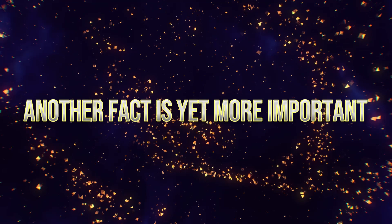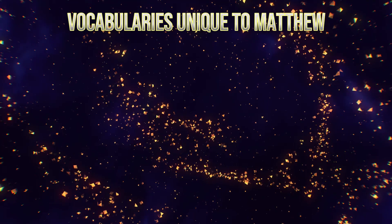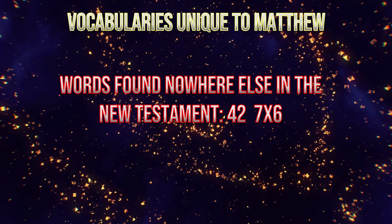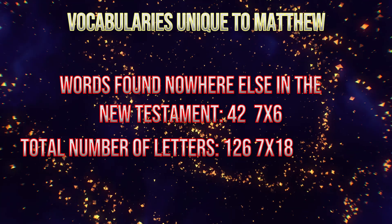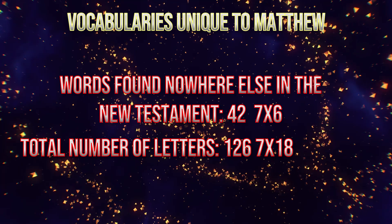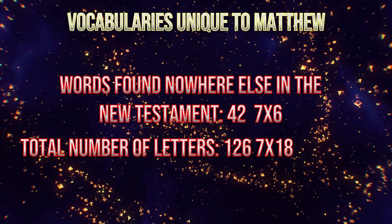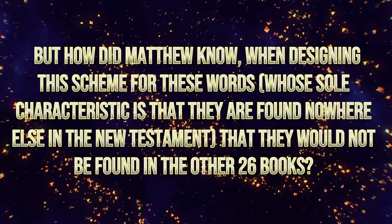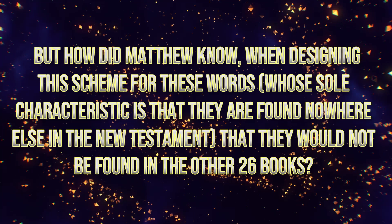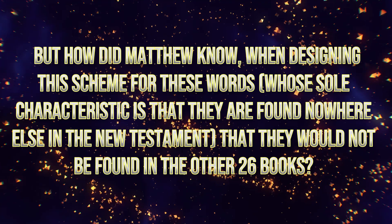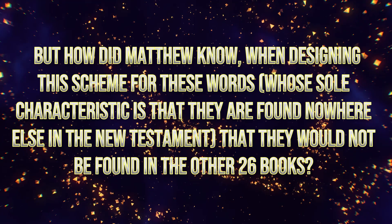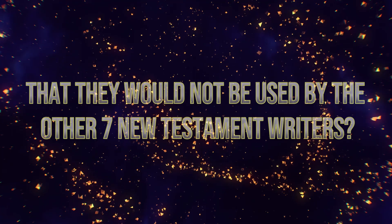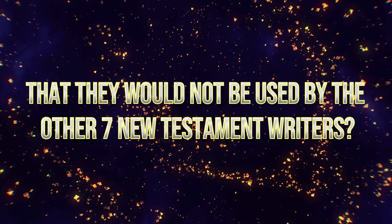Another fact is yet more important. There are vocabularies unique to Matthew — words found nowhere else in the New Testament. These number 42, and the total number of letters is 126. These are all multiples of seven. But how did Matthew know, when designing the scheme for these words whose sole characteristic is that they are found nowhere else in the New Testament, that they would not be found in the other 26 books and would not be used by the other seven New Testament writers?